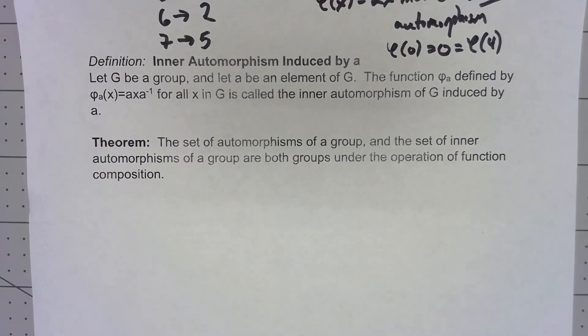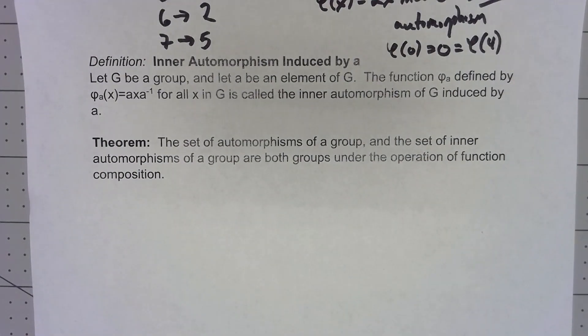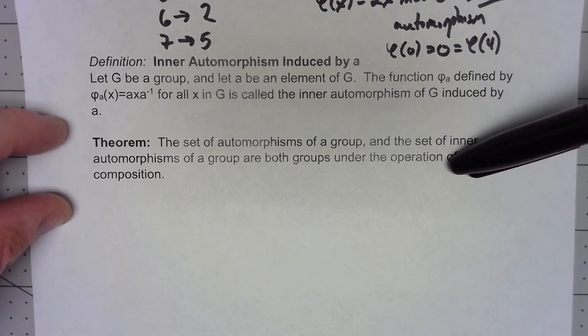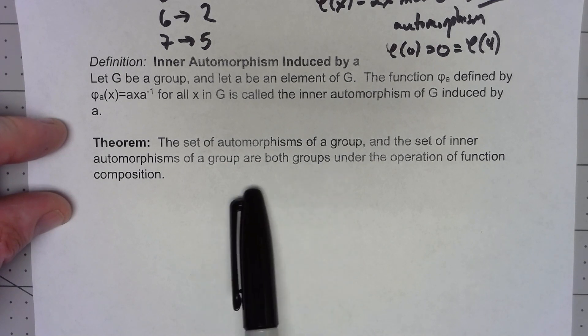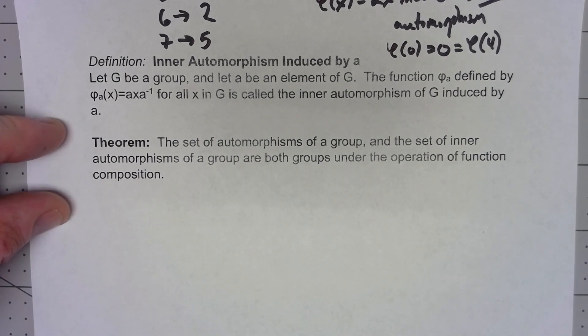Okay, now what's interesting about these automorphisms is that if you look at a group and you look at all possible automorphisms on that group, it is in fact a group. I'm kind of skipping forward ahead here. The set of automorphisms of a group is a group under the operation of function composition.